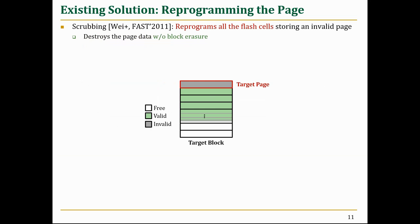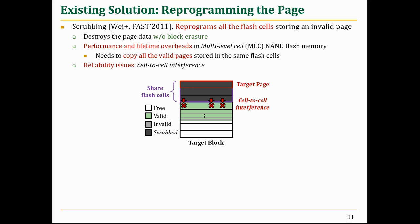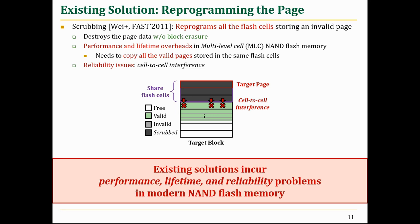To address this, prior work proposed scrubbing, which reprograms all the cells storing an invalid page to destroy the page contents without a block erasure. However, it also incurs performance and lifetime overheads in modern NAND Flash memory that stores multiple pages in the same Flash cells. As scrubbing destroys all the pages stored in the same cells, it needs to copy all the valid pages before performing scrubbing. Even if we can afford the copy overheads, cell-to-cell interference during scrubbing significantly affects the data reliability of adjacent cells. In summary, existing solutions are hard to adapt in modern SSDs due to performance, lifetime, and reliability problems.